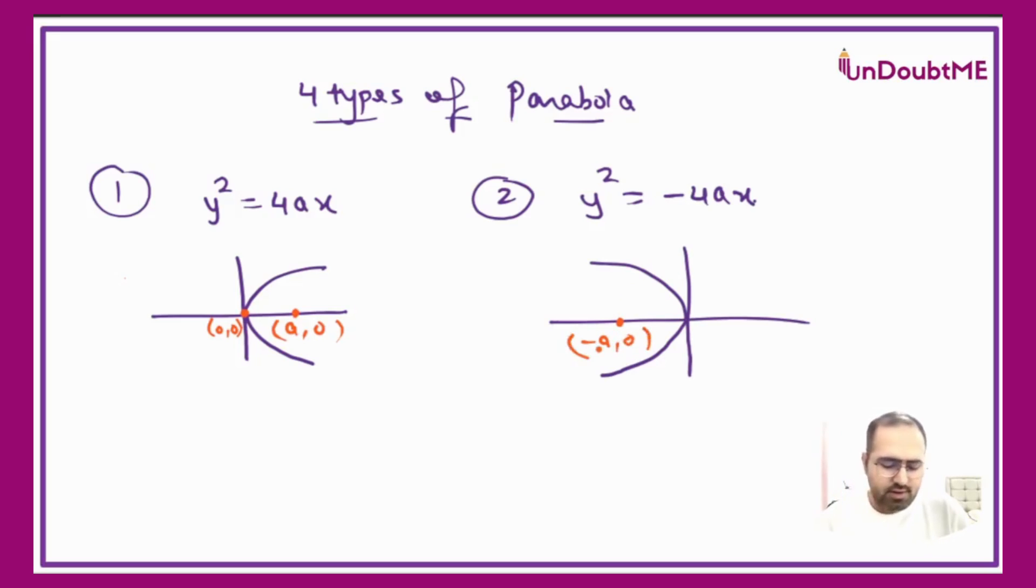Then the third one is x² = 4ay. Now you can just see that we have interchanged x and y. It's like we are doing that inverse. We switch x and y.